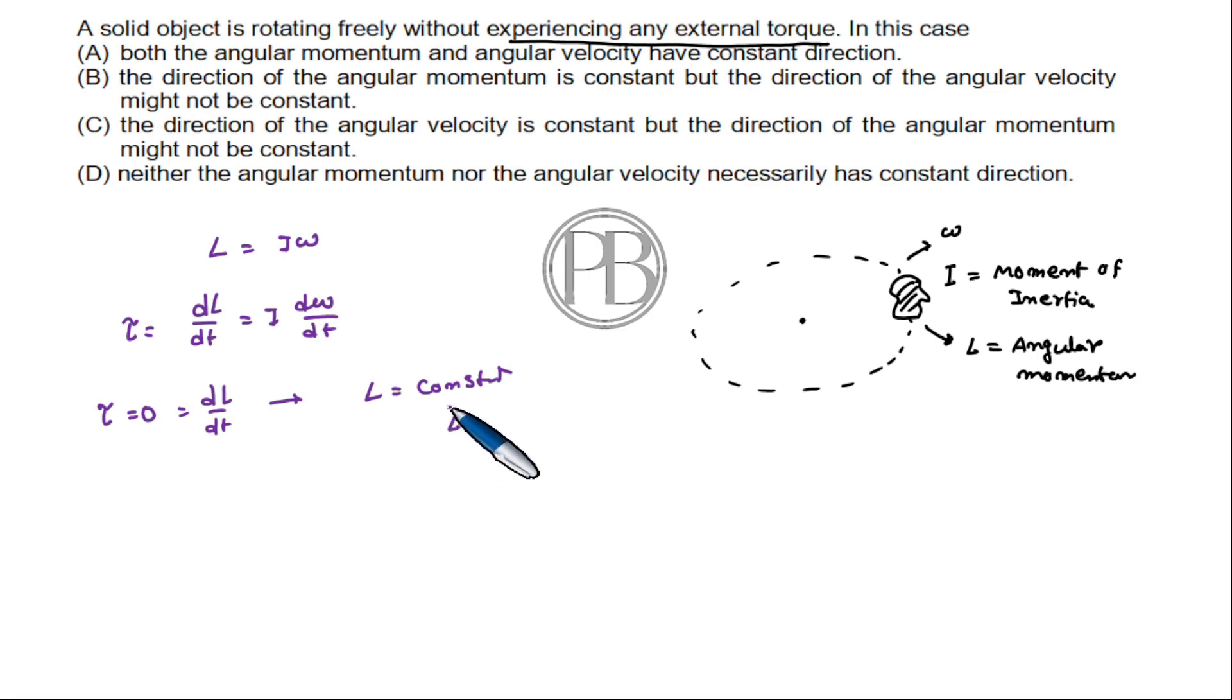L equals to I into omega. I is constant, so d omega dt equals to zero, meaning the omega vector is constant. The external torque is zero.